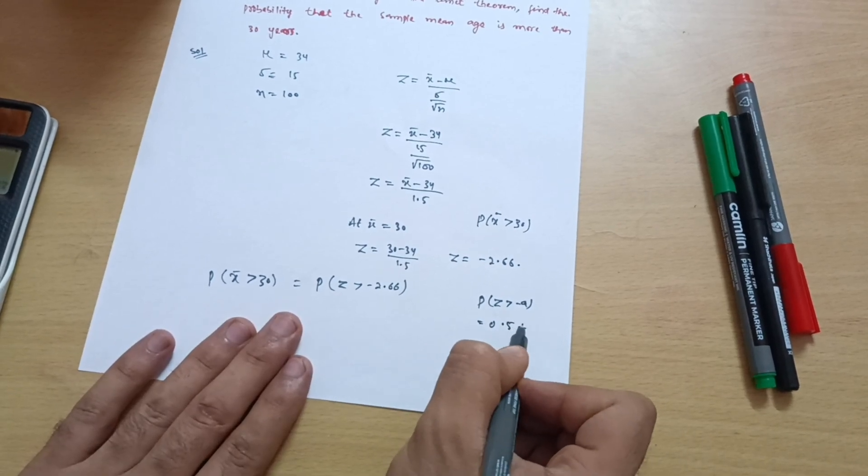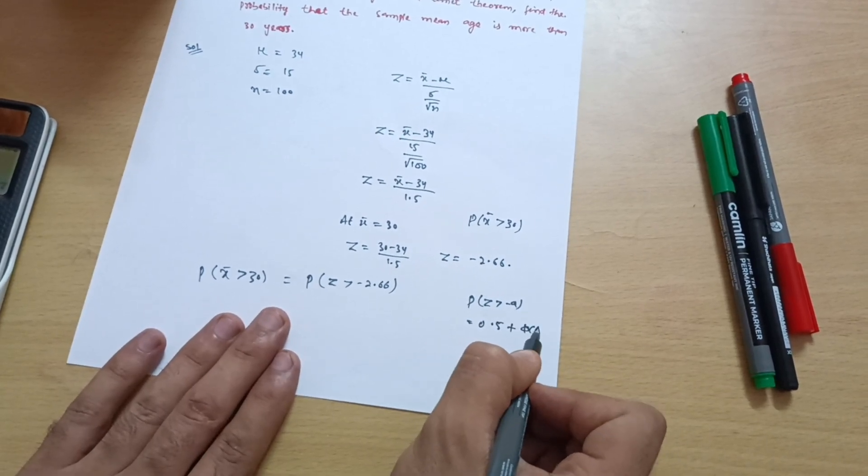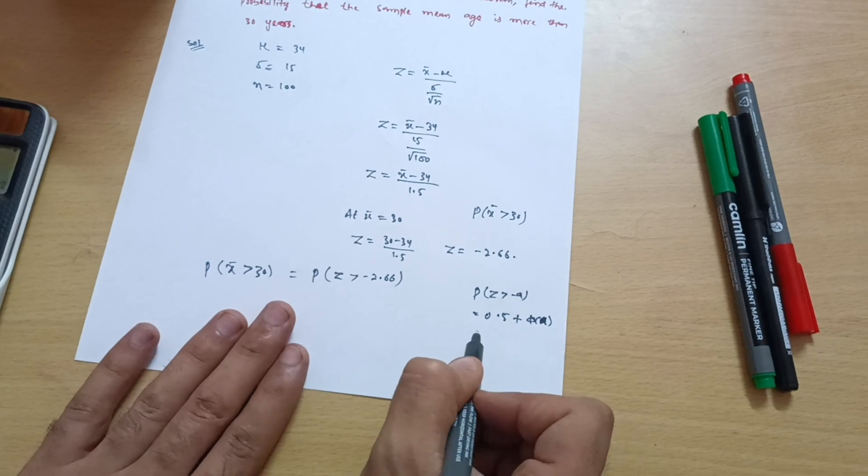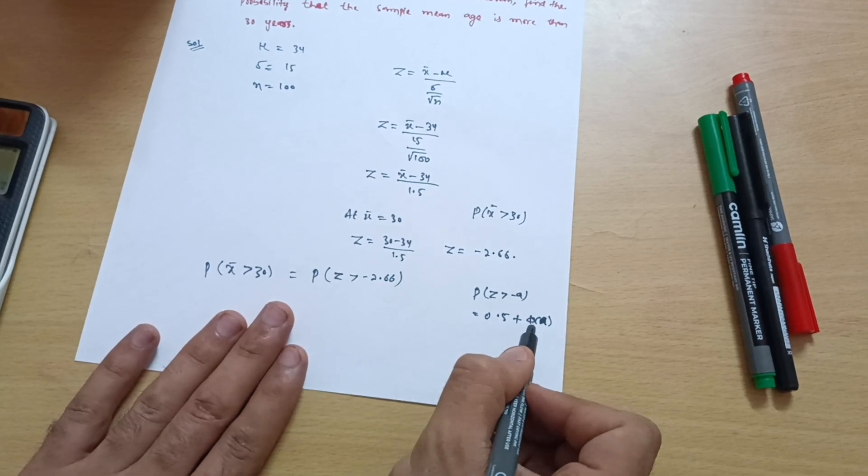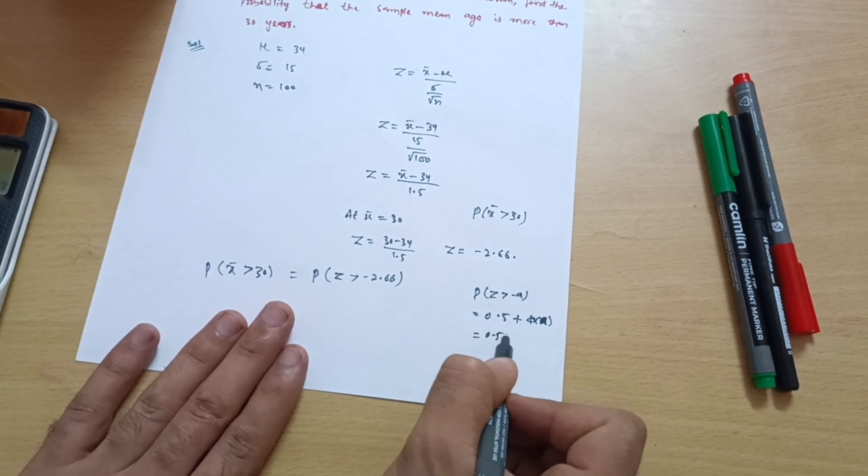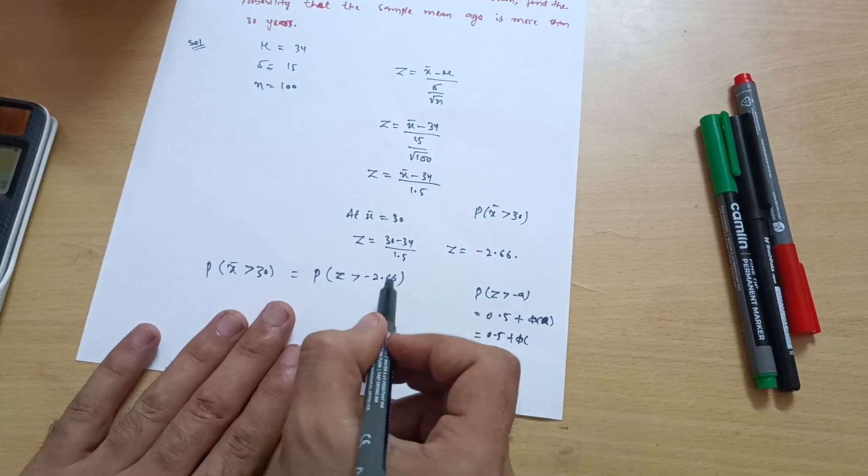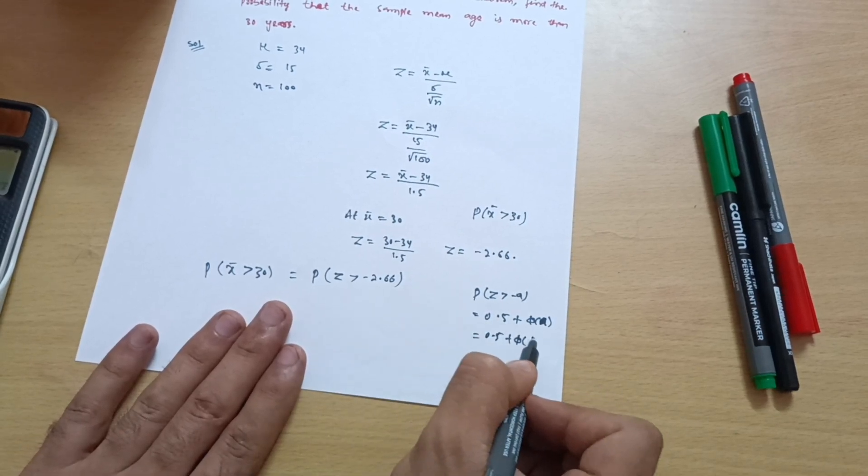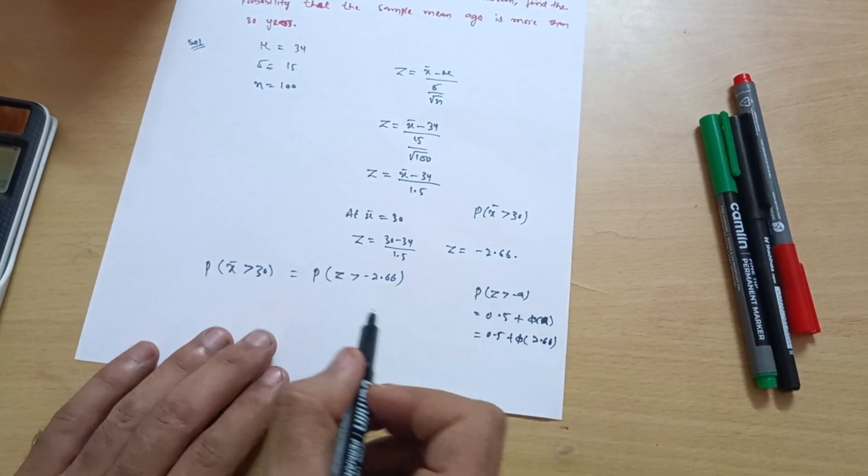So this is 0.5 plus phi of a. That is 0.5 plus phi of, what is the a value here? 2.66. So I can write 0.5 plus phi of 2.66.